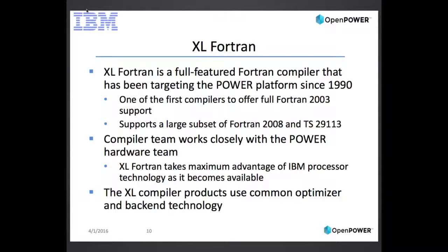XL Fortran is a full-featured Fortran compiler that has been targeting Power since 1990. We were one of the first compilers to provide complete Fortran 2003 support, and we provide most of Fortran 2008 and almost all of TS 29113, the C interoperability TS that will be part of Fortran 2015. The compiler team works closely with the Power hardware team to take maximum advantage of IBM Power processors, and we are sometimes involved in the hardware design by giving feedback. We have a very good optimizer for Power, available on all IBM platforms: Power for AIX, Power for Linux, and even z/OS.